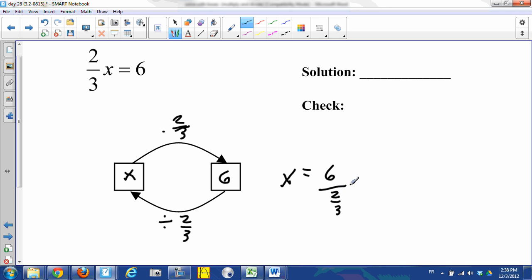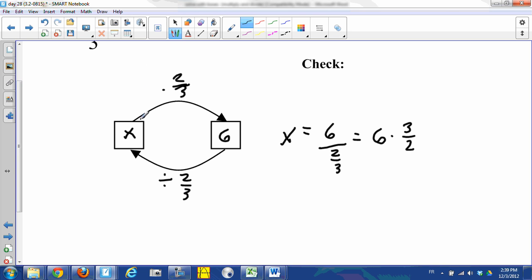Now the way we divide by two-thirds is the same as multiplying six by the reciprocal of two-thirds. In other words, down here I could have said, okay, to get back to x, instead of dividing by two-thirds, I can multiply by three-halves.